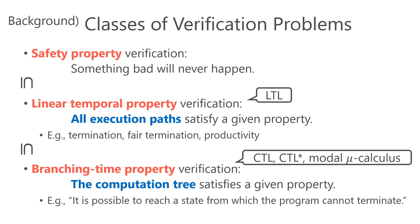A safety property says that something bad will never happen. The safety property verification problem has been extensively studied because of its practical importance. The class of linear temporal properties is more general — it is a property on a single execution path, and a linear temporal property verification problem asks if all execution paths of a given program satisfy a given property. A typical example is fair termination, saying that every execution path is terminating or unfair. Branching time properties are even more general: they are properties on trees consisting of all execution paths of a given program.